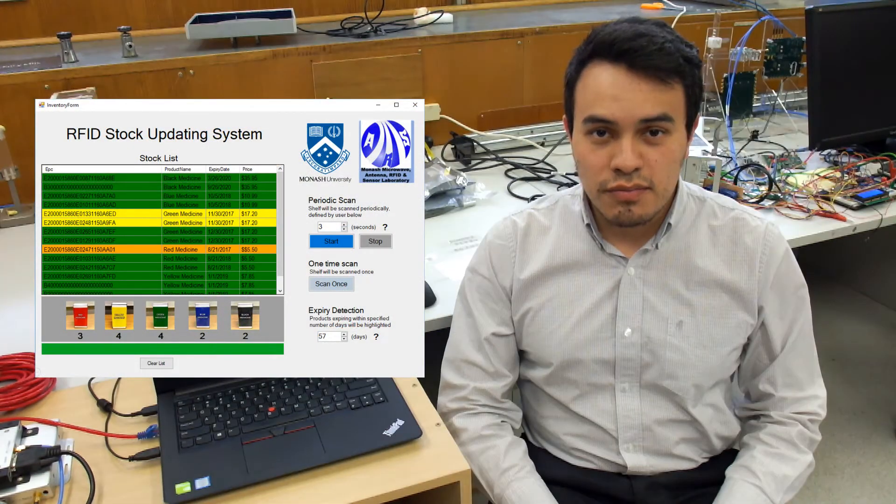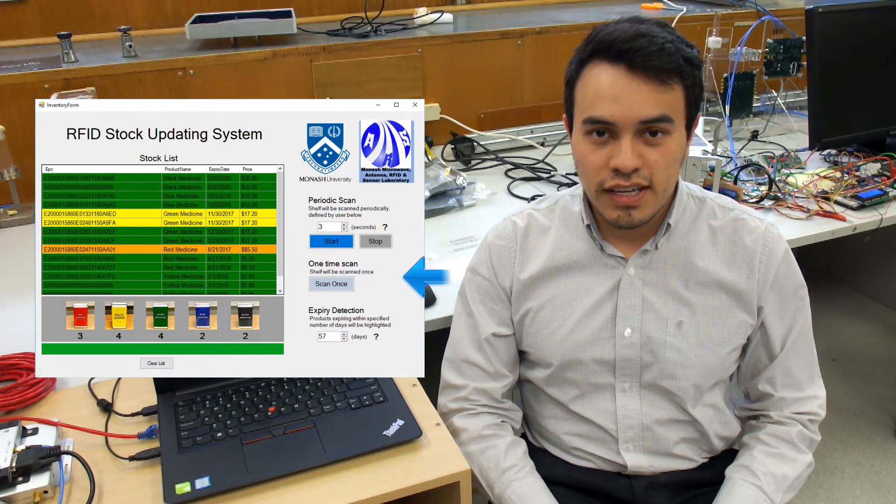First, our graphical user interface. This is how the user will interact with the system. We have three main features: single scan, periodic scan, and early expiry detection.